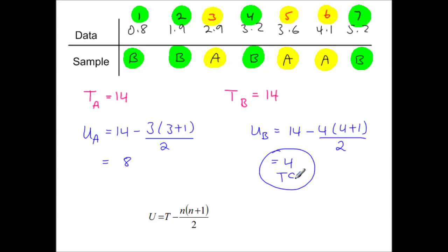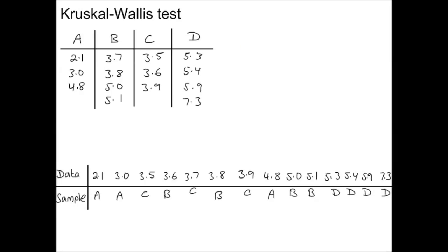For the Kruskal-Wallis test, you need multiple samples, at least three samples. In this example we have four, so we could represent this data in an alternative way, like this. So you've got a single row with all the data in there, and the row underneath tells you which sample the data value belongs to. So for example, we have three values for sample A. So there's a value for sample A here, there's the 2.1 sample A, 3.0 for sample A here, and that 4.8 is here for sample A.